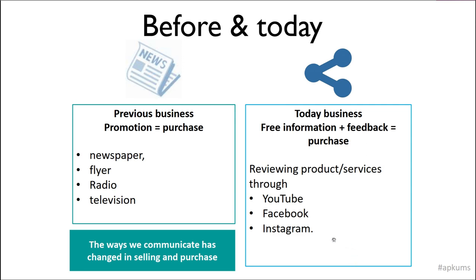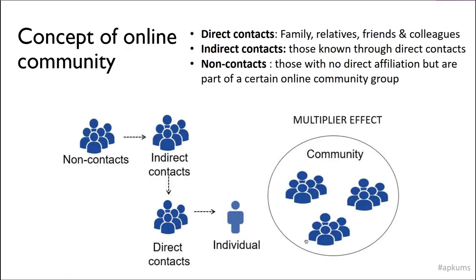The way we communicate has changed in selling and purchasing your product. This is the concept of the online community. You have yourself as an individual, then direct contact which includes your friends, relatives, and colleagues. Indirect contact is those known through direct contact — this wider area we call the online community.